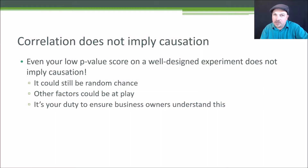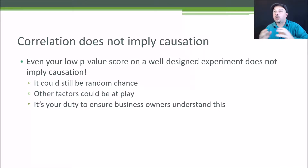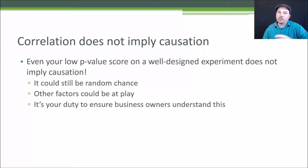Remember, correlation does not imply causation. Even with a well-designed experiment, all you can say is there is some probability that this effect was caused by this change you made. At the end of the day, there's always going to be a chance that there was no real effect, or you might even be measuring the wrong effect. It's your duty to make sure that the business owners understand that these experimental results need to be interpreted — they need to be one piece of their decision, because there is room for error in the results.